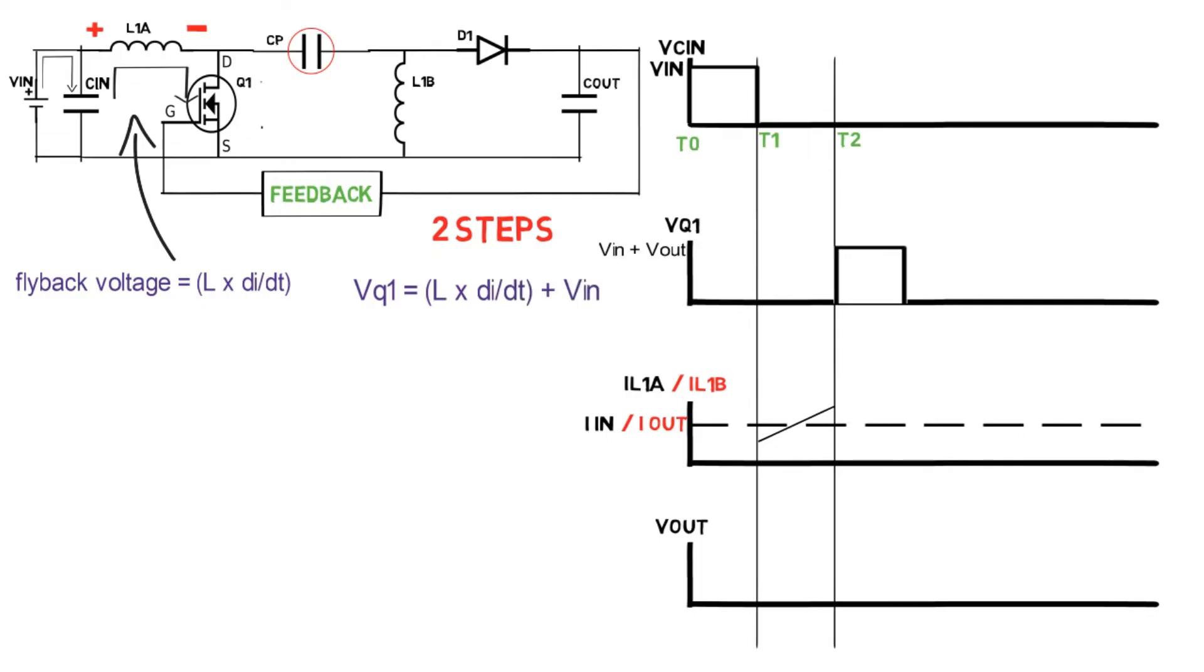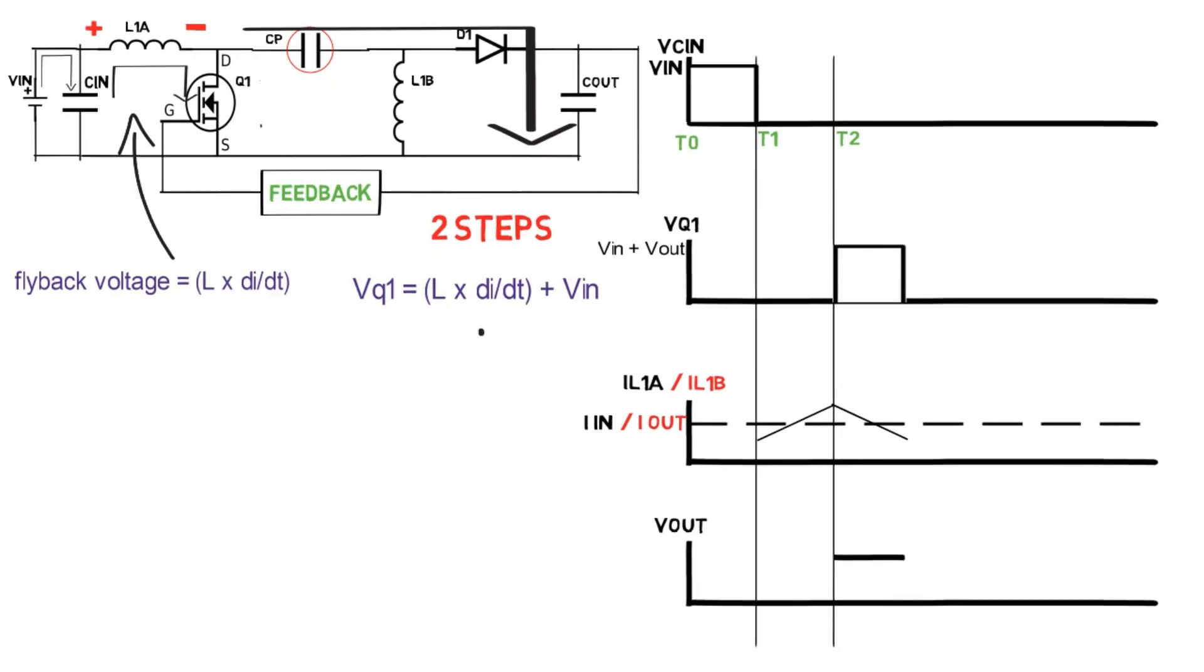And in this case, capacitor CP starts charging. As this voltage is not purely DC, the current flows through capacitor and diode D1 becomes forward biased, and current flows to output capacitor Cout and it starts charging. And we get the output voltage, that is, Vout is equal to L into di by dt plus input voltage if Vout expected is greater than Vin.